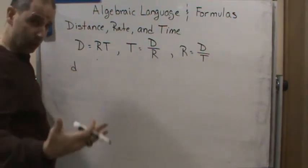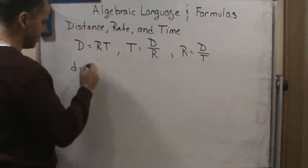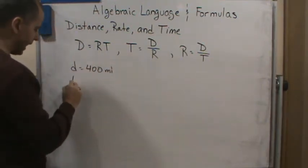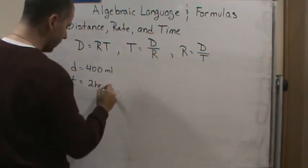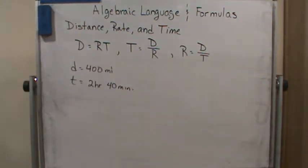So we always want to write down the unknowns. Always want to write down the variables that are given and also what you're trying to solve for. So in this case, the distance is 400 miles. And the time that they're guaranteeing is going to be no more than two hours and 40 minutes. Now, the question is, what speed must the train average in order to fulfill this guarantee?